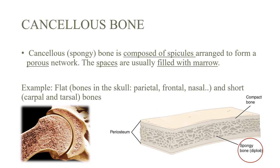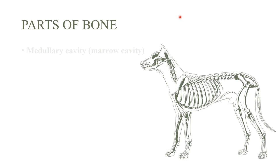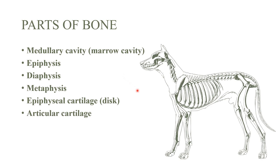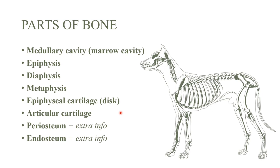Now we'll cover more bone parts: the medullary cavity, epiphysis, diaphysis, metaphysis, epiphyseal cartilage or disc, articular cartilage, periosteum, and endosteum — with some extra info. Be sure to stay for the rest of the lecture.